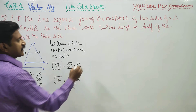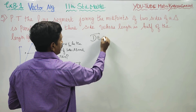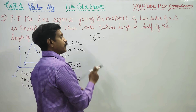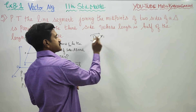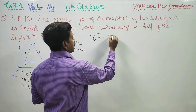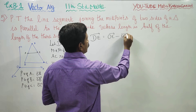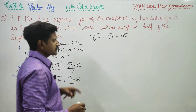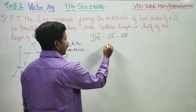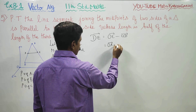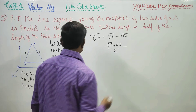I am going to find DE vector. What is the formula for DE vector? It is terminal point minus starting point — end point minus starting point. So DE vector equals OE vector minus OD vector. What is my OE vector? We have found it is OA vector plus OC vector by 2.